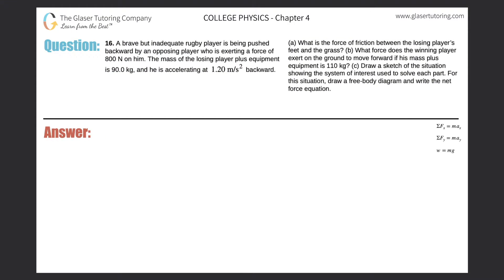Number 16: a brave but inadequate rugby player is being pushed backward by an opposing player who is exerting a force of 800 newtons on him. The mass of the losing player plus his equipment is 90 kilograms, and he is accelerating at 1.2 meters per second squared backwards. Letter A: what is the force of friction between the losing player's feet and the grass?